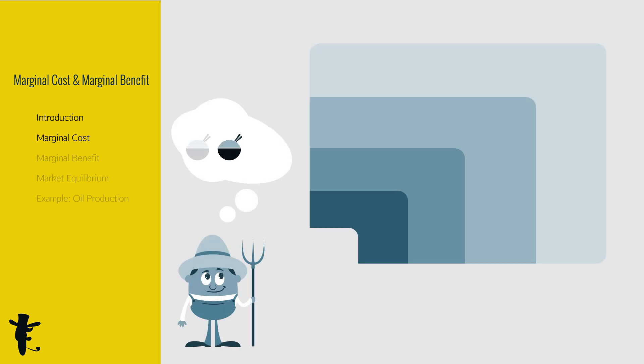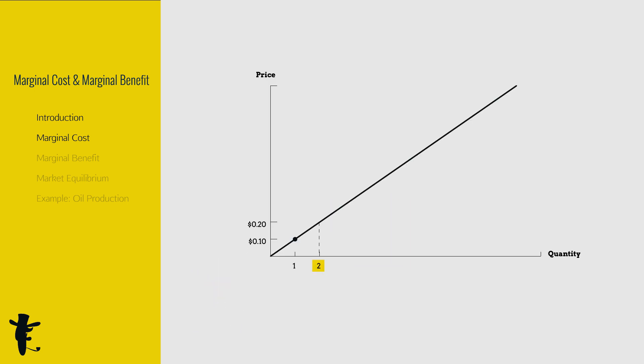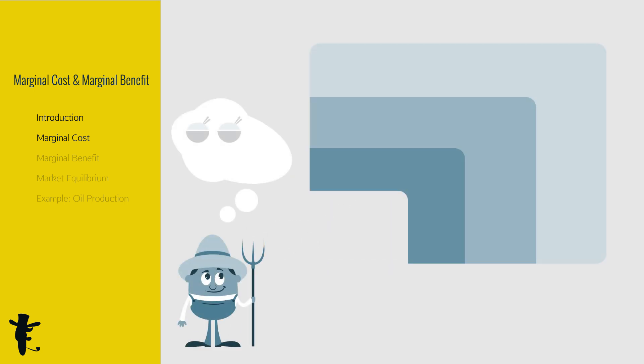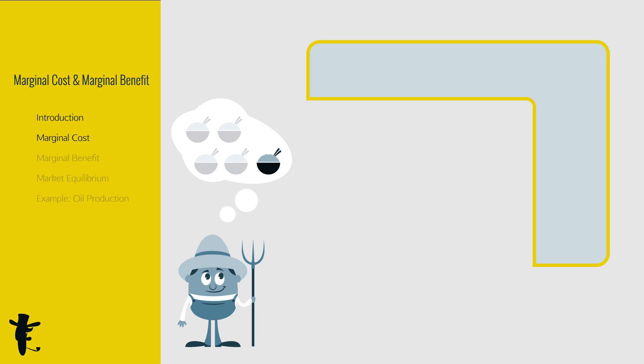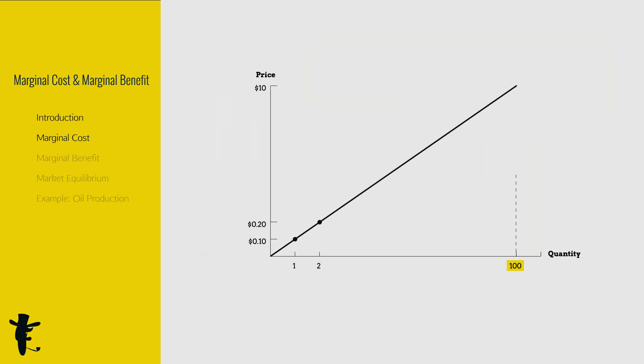To produce the second unit, we'll got to look at less fertile land, so cost increases to 20 cents. As we produce more rice, we use up more land. Every additional land becomes less and less suitable for cultivating rice, and the cost increases for every additional unit. At the hundredth unit of rice, the cost is $10. This is why the marginal cost curve slopes upwards.